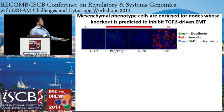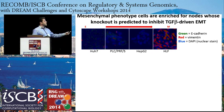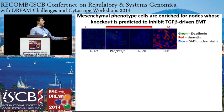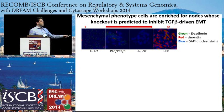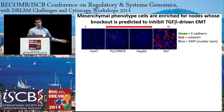Here's some immunofluorescent staining of a spectrum of cell lines, showing the epithelial-to-mesenchymal spectrum using E-cadherin as a marker of epithelial phenotype and vimentin as a marker of mesenchymal phenotype. On the left, HU7 cells have a lot of E-cadherin expression, very little vimentin expression, and you can see their cuboidal phenotype. On the right, the HLF cell line has a ton of vimentin and absolutely no E-cadherin, and you can almost see their spindle-like elongated phenotype.